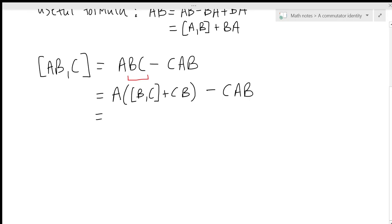Now we can expand this out to get A times [B,C]. That's the first term in our identity. Then we have ACB minus CAB.